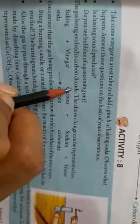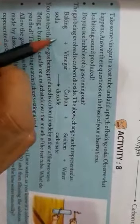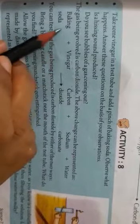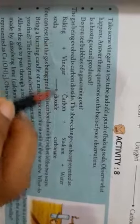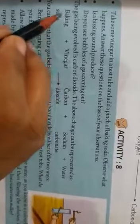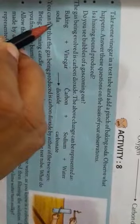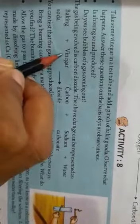We can represent this chemical change by a chemical reaction. First we take baking soda, then vinegar — we add baking soda to the vinegar.